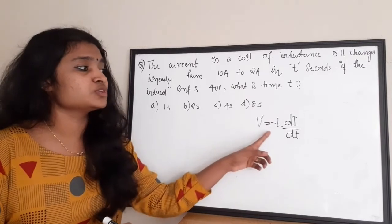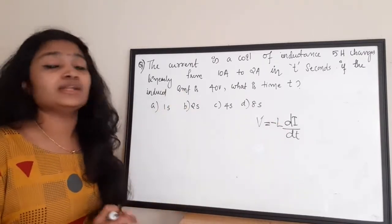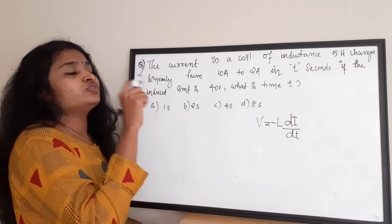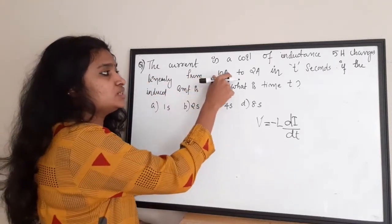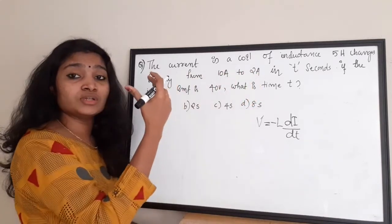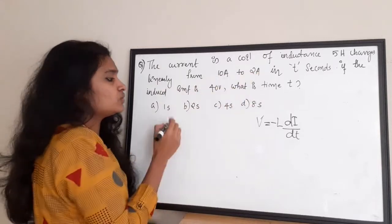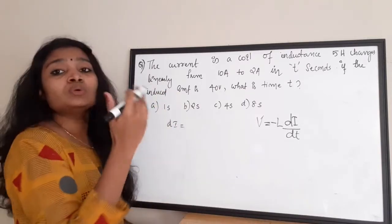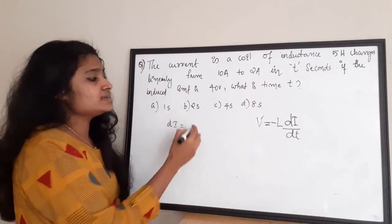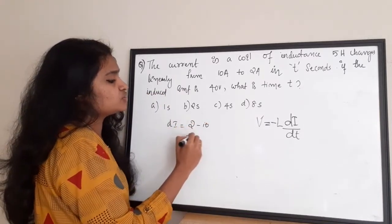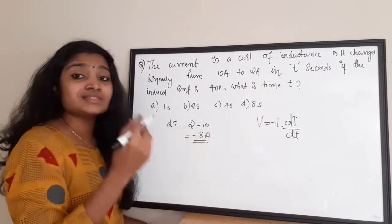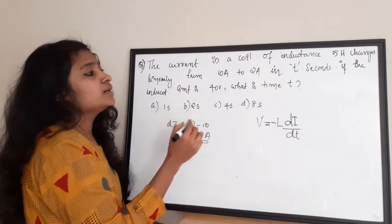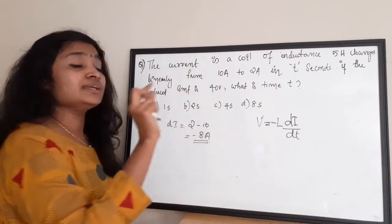I am going to apply the values given in this question to the equation V = -L × dI/dT to find the value of T. An inductor of value 5 henry has current changing from 10 ampere to 2 ampere, so the current is decreasing. The value of change in current dI is 2 minus 10 which equals minus 8 ampere. Since the current is decreasing, dI is minus 8 ampere.